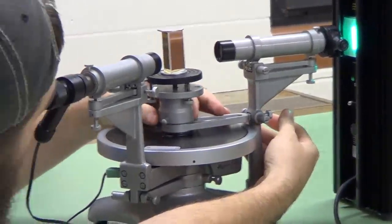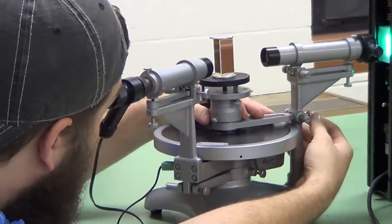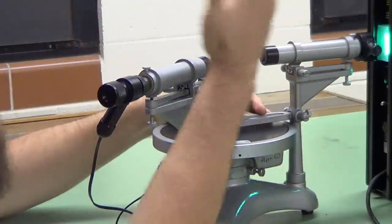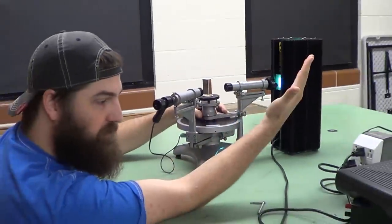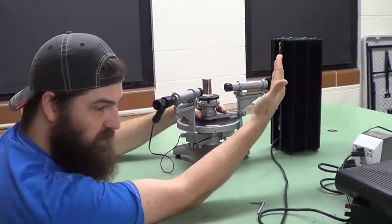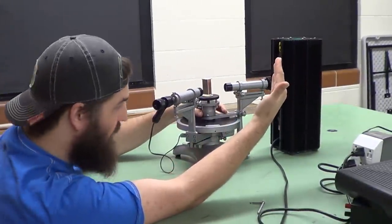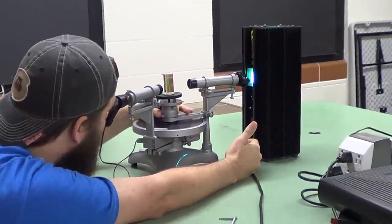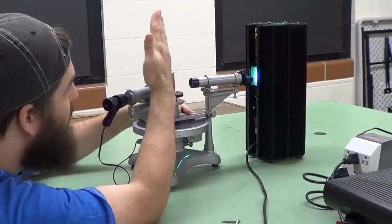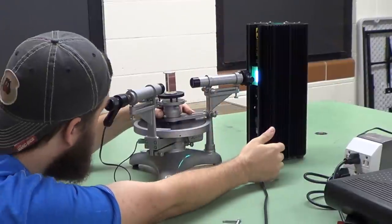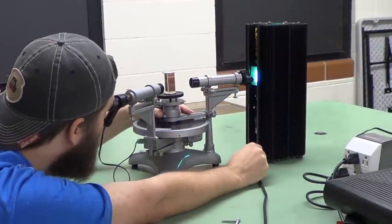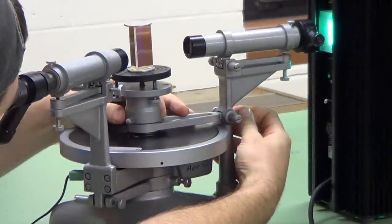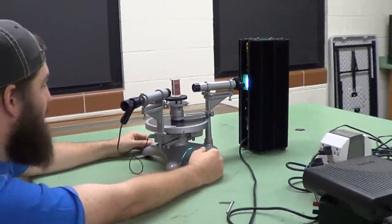You then look through the imaging telescope and rotate the stage. As you do this, you'll see the lines move. If they move one direction and just keep going, you're rotating the wrong way. So if you turn it around and rotate the other way, you'll see that they move one direction, then stop and turn around. The goal here is to lock down the stage at the point when they turn around. That is our minimum deviation angle.